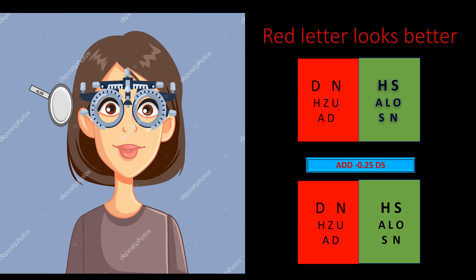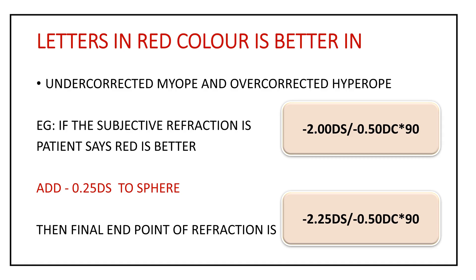If the patient says red is better compared to green, you add a minus 0.25 spherical lens so that the green also becomes clearer. By adding minus 0.25 spherical, both spectrums become equally clear. Red being better is seen in an under-corrected myope or over-corrected hyperope.